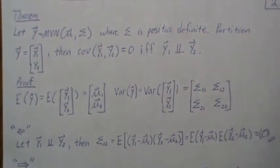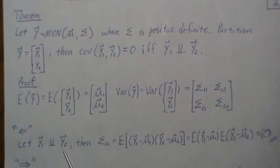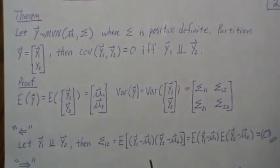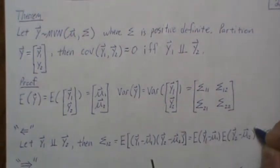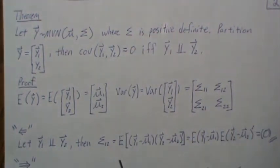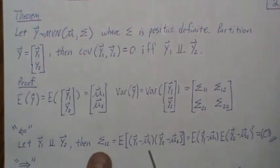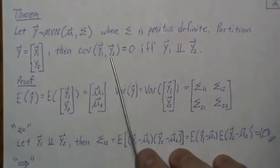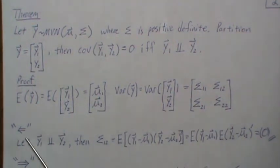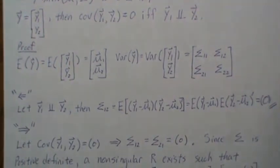Let's prove the first direction: assume y1 and y2 are independent and calculate the covariance matrix between them. Since y1 and y2 are independent, we can break them apart, but the expected value of each centered term is zero, so the product is zero. Therefore the covariance matrix is zero. Going this direction was straightforward.